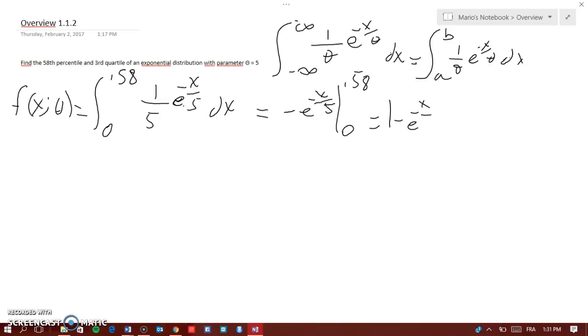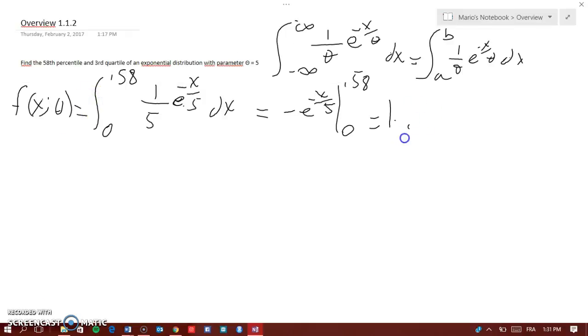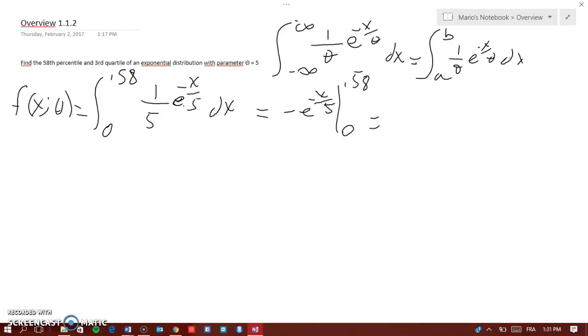I'm gonna erase this because it's not really important. I probably would leave it from here because you will actually understand exactly how it works. So let's just say, it will be 1 minus e to the negative 0.58 over 5, and you're gonna get a number which I didn't put it, so that's what it is.